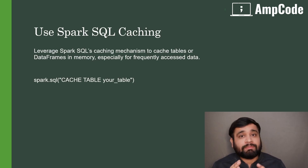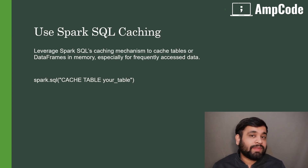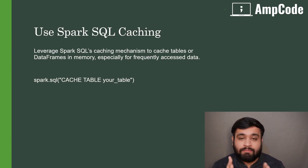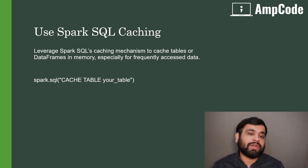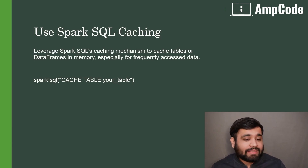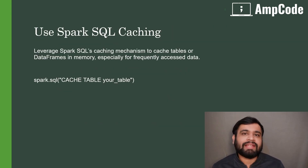The next technique is Spark SQL caching. Similar to persist and cache, you should leverage the Spark SQL caching mechanism using spark.sql() to cache tables or DataFrames in memory. When those DataFrames are accessed in further computation, Spark doesn't have to read from disk or recompute. You should especially use this for frequently accessed data to speed up your Spark queries and boost overall performance.